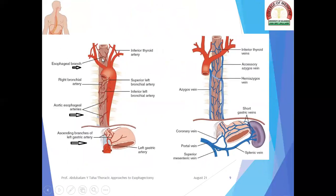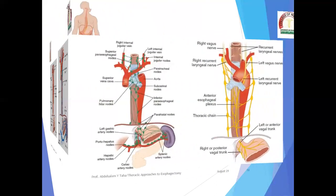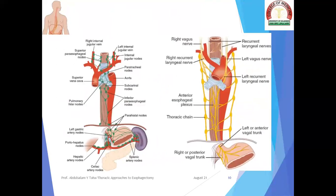We see the esophageal branches of the inferior thyroid artery, the aortic esophageal branches, and the ascending branches of the left gastric artery. Regarding venous drainage, the venous drainage starts with the short gastric veins and coronary vein in the abdomen. The azygous and hemi-azygous venous system drains the esophagus. The esophagus also has lymphatic drainage, starting with the para-hiatal lymph nodes in the abdomen and the para-esophageal lymph nodes (station 8) in the chest, as well as the subcarinal and paratracheal lymph nodes.